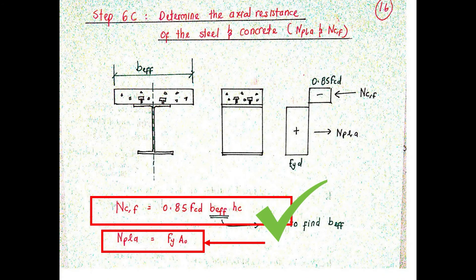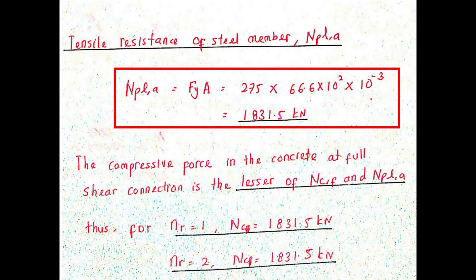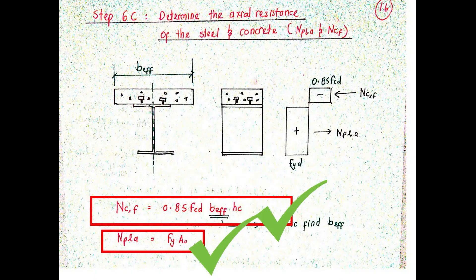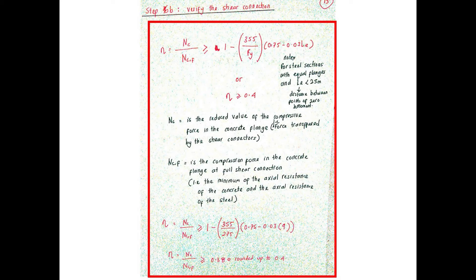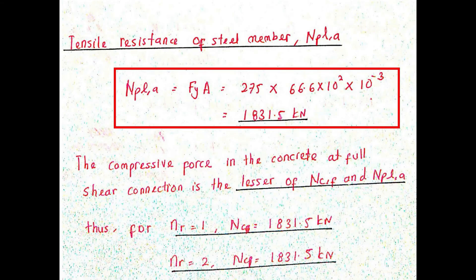We have calculated the value of NCF. Next is to determine the value of NPLA, which is the axial resistance of the steel. The tensile resistance of the steel member NPLA is calculated as shown in the red box, which in this case is equivalent to 1,831.5 kN. The concrete force at full shear connection is the lesser of NCF and NPLA. Therefore, in this example the compressive force is equivalent to NPLA, which is 1,831.5 kN.